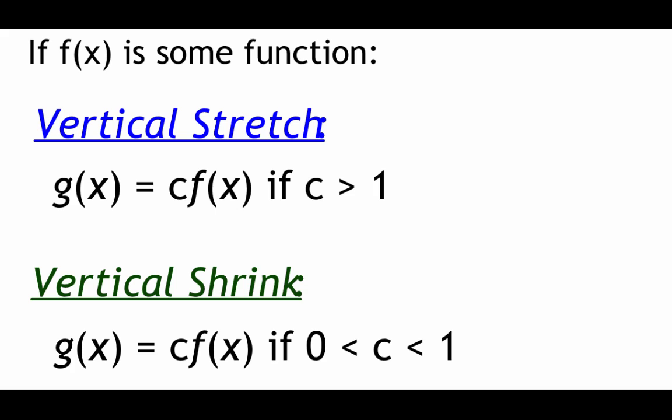The first type of non-rigid transformation that we're going to talk about is a vertical stretch or shrink. So let's just say that f(x) is some function that we're dealing with. In order to vertically stretch out this function, what we're going to have to do is we're going to have to take this function f(x) and multiply it by some c value. But in order to stretch this thing out, we need that c value to be bigger than one. So like two, three, four, anything like that is going to stretch our graph up vertically.